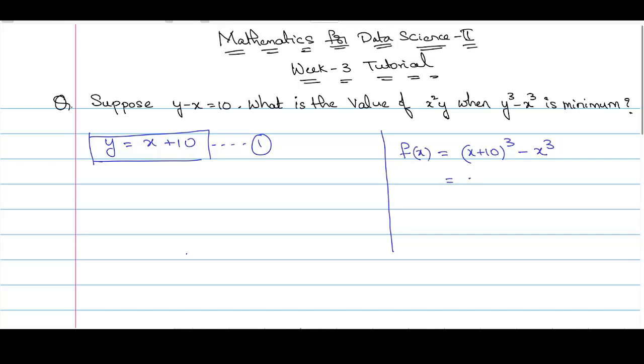Let us expand this. We get x cube plus 30x square plus 300x plus 1000 and minus x cube. This x cube and minus x cube gets cancelled and we will be left with 30x square plus 300x plus 1000, which is f of x.